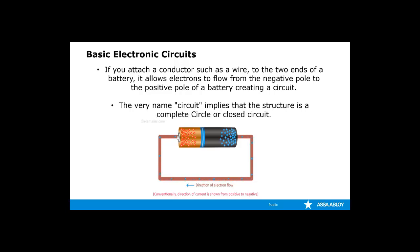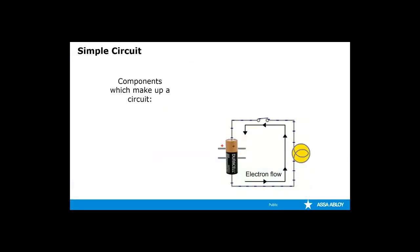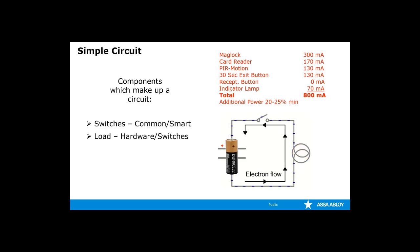The very name circuit implies a circular structure or a closed circuit. If a load, such as a lamp, was placed in series with the wire, the lamp would glow due to the electrons traveling through the filament of the light. The components that make up a simple circuit are: a switch, which can either be a smart switch or a common switch. A smart switch requires electricity to operate, while a common switch does not. Next, we have the load — the load itself is why the circuit was created. The intention is to get the current to the load, and the load can be anything that requires electricity, such as a mag lock, a card reader, a PIR, a timer, or even a lamp.